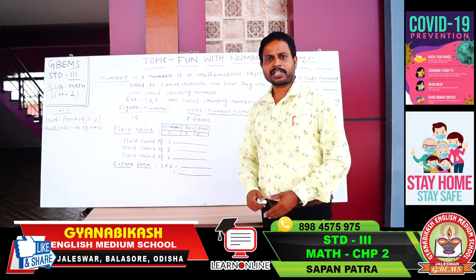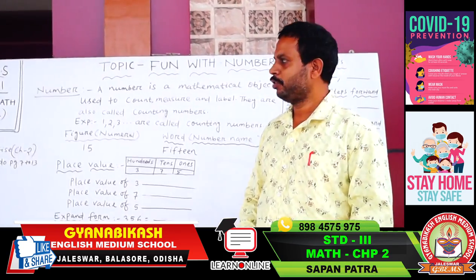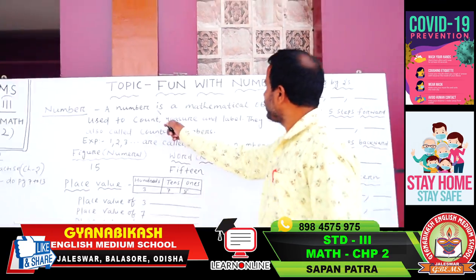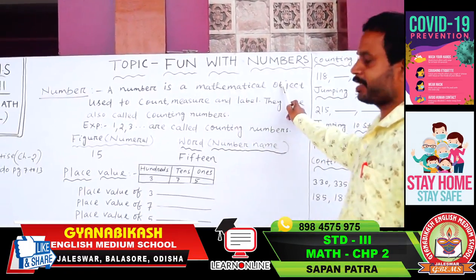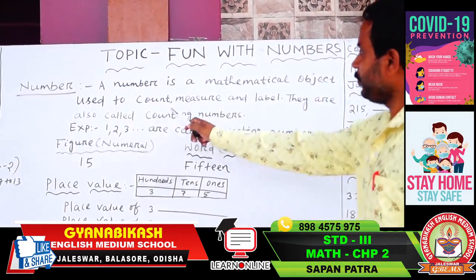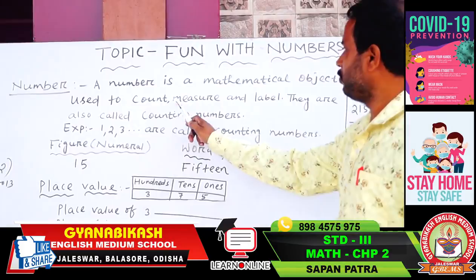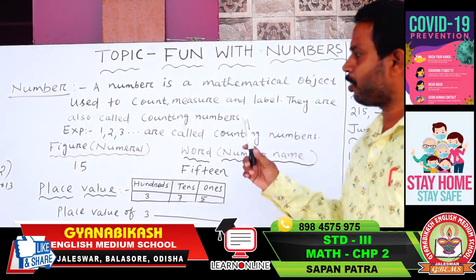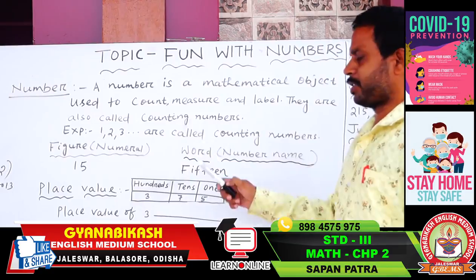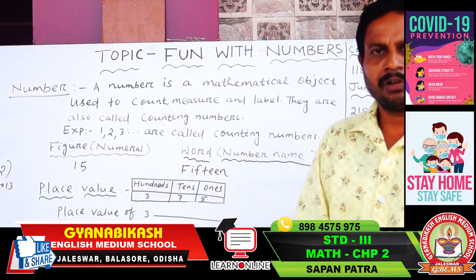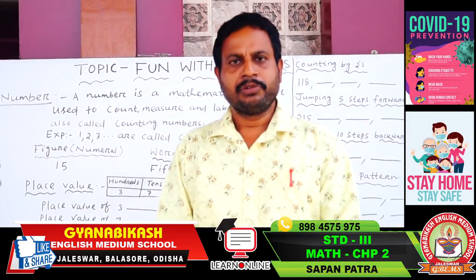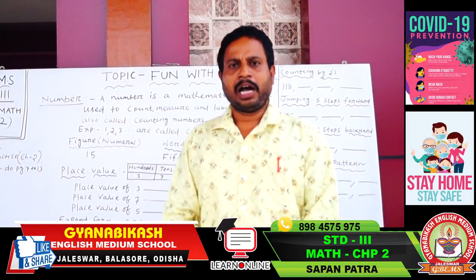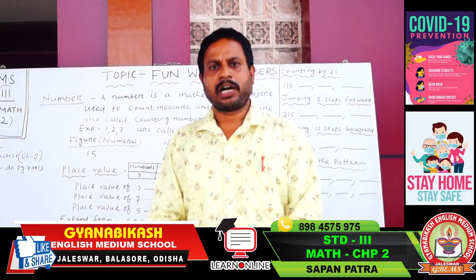First of all, we have to know what is a number. A number is a mathematical object used to count, measure and label. They are also called counting numbers. For example, 1, 2, 3, 4 and so on are called counting numbers.